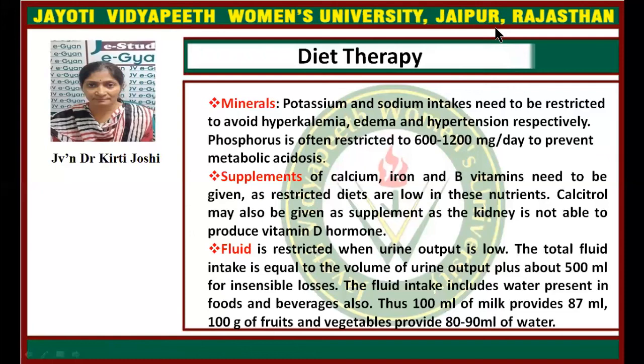Fluid is restricted when urine output is low. The total fluid intake equals the volume of urine output plus about 500 ml of insensible losses. The fluid intake includes water present in foods and beverages. For example, 100 ml of milk provides 87 ml of water, and 100 grams of fruits and vegetables provide 80 to 90 ml of water.